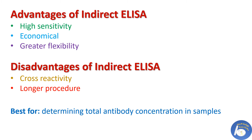What are the advantages of indirect ELISA? It is highly sensitive because more than one labeled secondary antibody can bind to the primary antibody. It is economical because fewer labeled antibodies are needed. It has greater flexibility because different primary antibodies can be used with a single labeled secondary antibody. The disadvantages are that cross-reactivity between primary antibody and secondary antibody may happen, and indirect ELISA has a longer procedure because additional incubation steps are involved. Indirect ELISA is best for determining total antibody concentration in a sample.